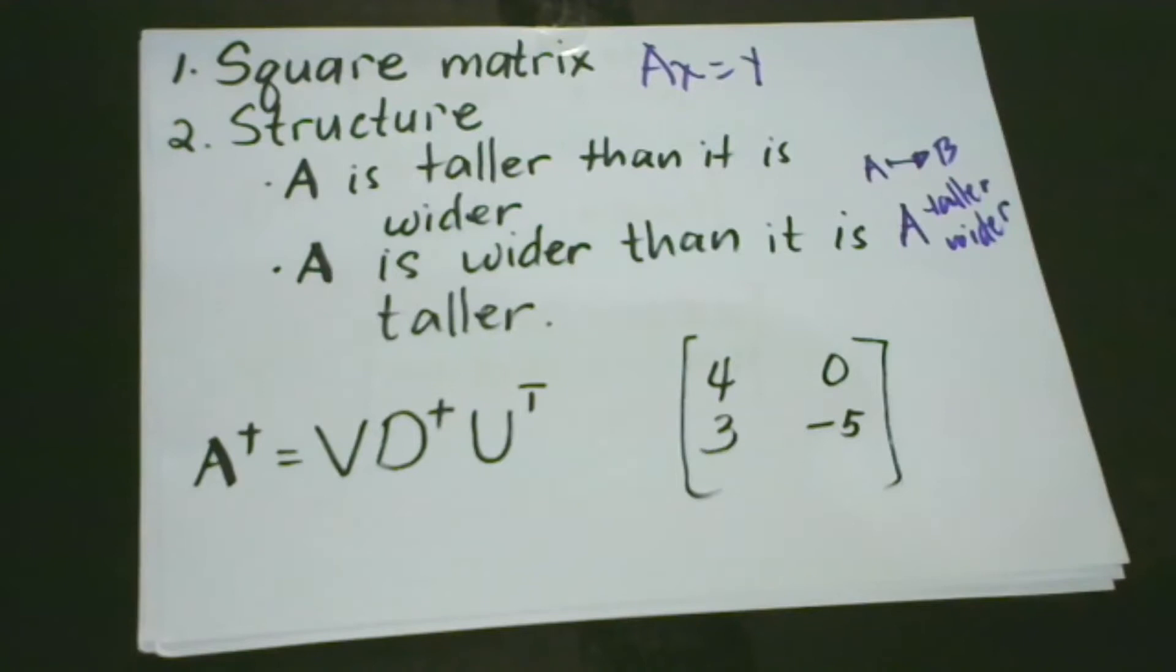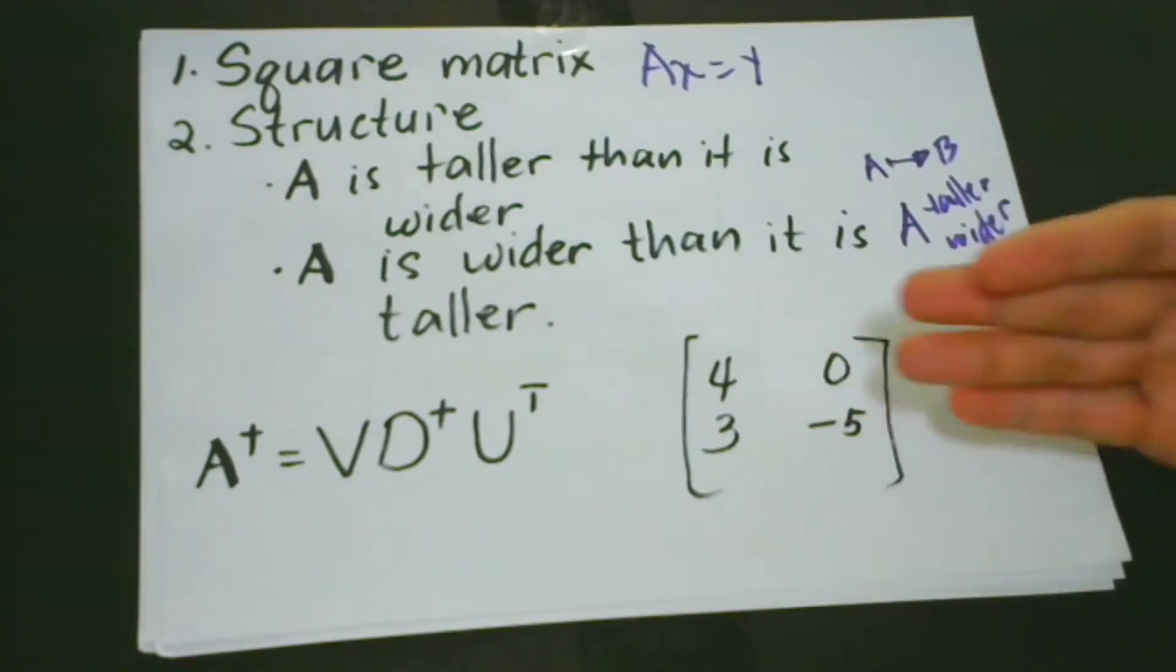Our second situation is that A is wider than it is taller. So definitely this is the opposite of the first situation. So rows have more elements than the columns. In this situation, there could be many solutions. So to make some advances in the cases we've mentioned, we are going to use the Moore-Penrose pseudo-inverse.